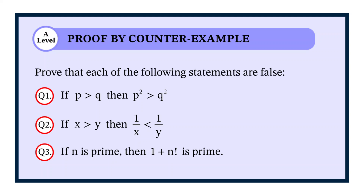In the first example, we're told that if p is greater than q, then p squared is greater than q squared. In the second example, we're told that if x is greater than y, then 1 over x is less than 1 over y. And finally, in the third example, we've been told that if n is prime, then 1 plus n factorial is also prime.